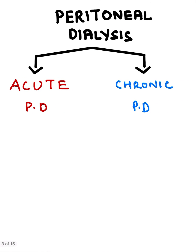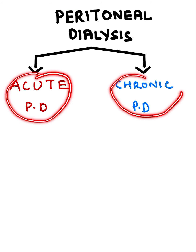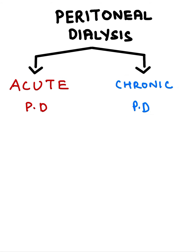Before we go ahead, let's have a brief overview. Peritoneal dialysis is of two types: acute PD and chronic PD. We're not going to be talking about chronic PD because in chronic PD we do not prepare solutions — the solutions are readily available. But in acute PD, we might have to prepare our PD fluids.